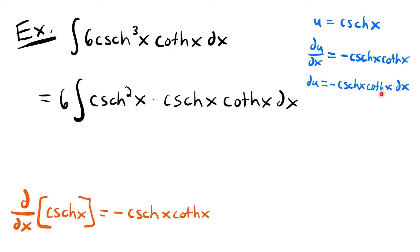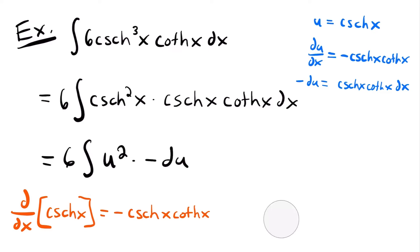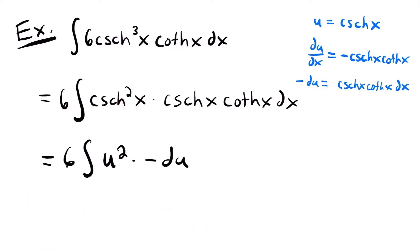We need to find that du within our integral. We see hyperbolic cosecant and hyperbolic cotangent and dx, but not the negative. So multiply both sides by negative 1 — the right side becomes positive and du becomes negative du — and now we have a term that matches what's in our integral. We can rewrite this integral in terms of u as 6 times the integral of u squared times negative du.